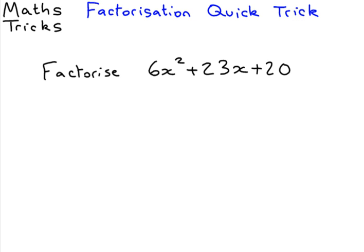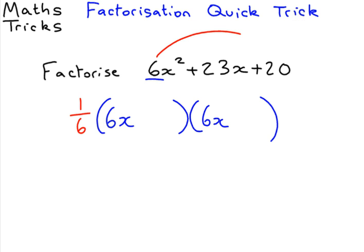Next question. 6x² plus 23x plus 20. Now our method says, because there's a 6 here, we put 6x, 6x in both of our brackets. But because that isn't going to work, we need to divide by 6. Now our two numbers are going to come from 6 times 20 is 120, and we have to add to 23. So add to 23, times to make 120.